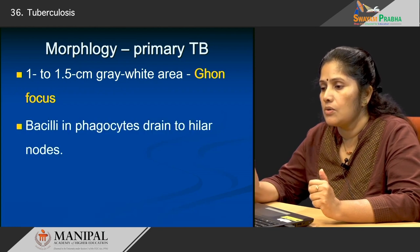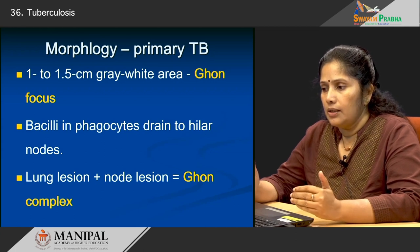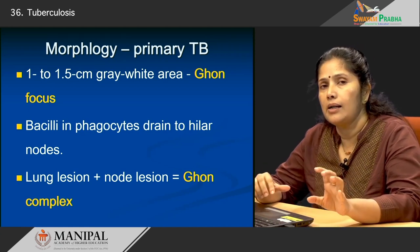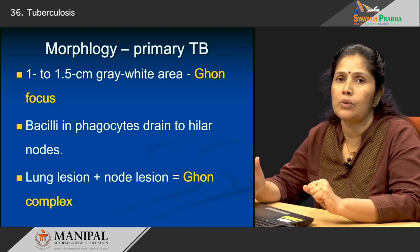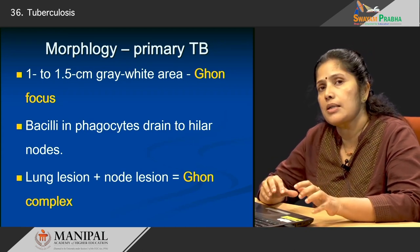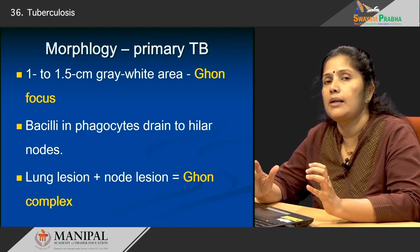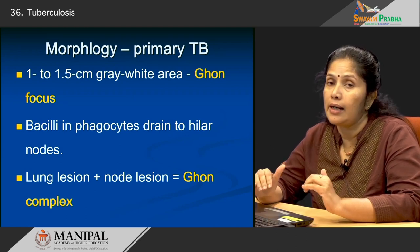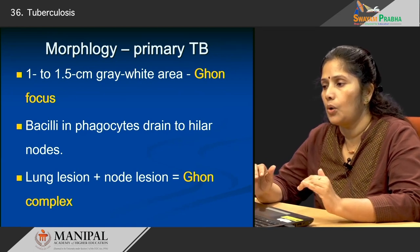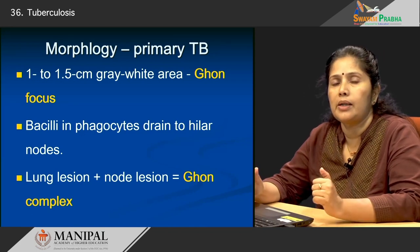The bacilli present within the macrophages at the site of lung damage drain into the regional lymph nodes — the hilar lymph nodes for the lung. Many patients will have enlargement of this hilar lymph node. This combination of a lung lesion together with hilar node involvement is known as the Ghon's complex. Both Ghon's focus and Ghon's complex are associated with primary tuberculosis.